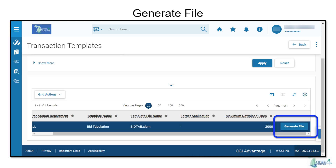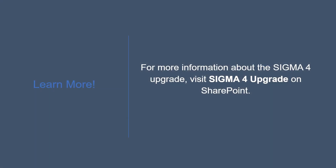Next, click Generate File to view the solicitation responses in an organized file format, including information such as vendor names and total cost of their bids. For more information about the Sigma4 upgrade, visit Sigma4 Upgrade on SharePoint.